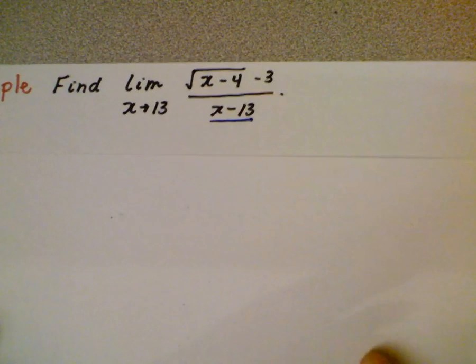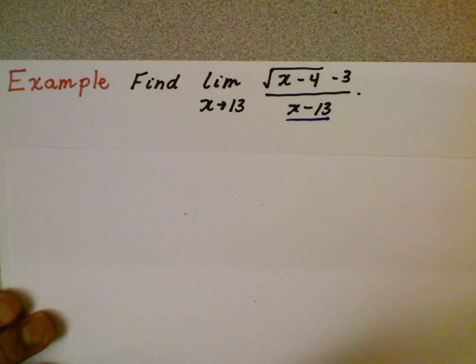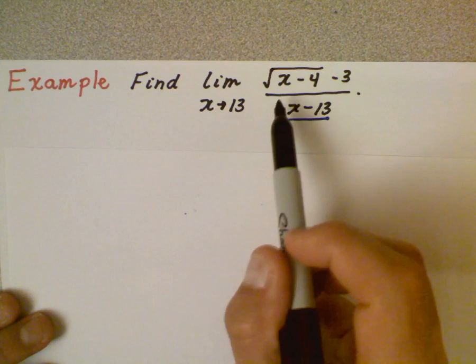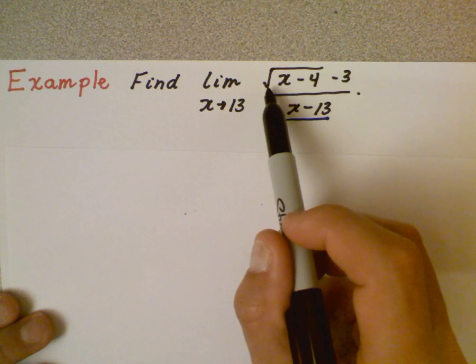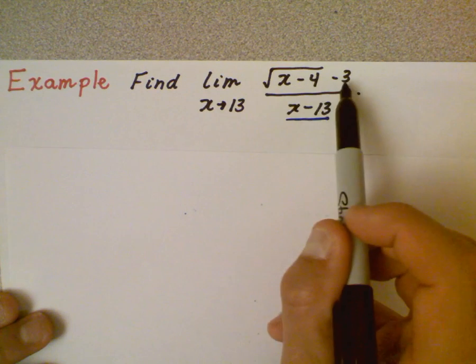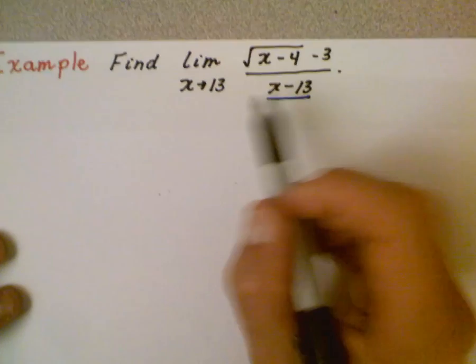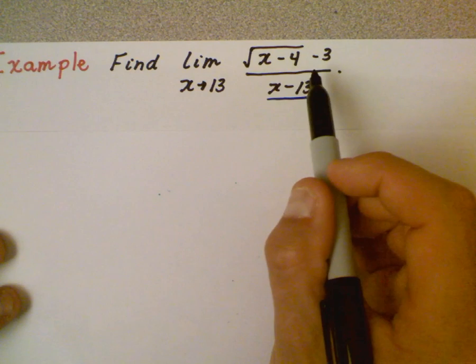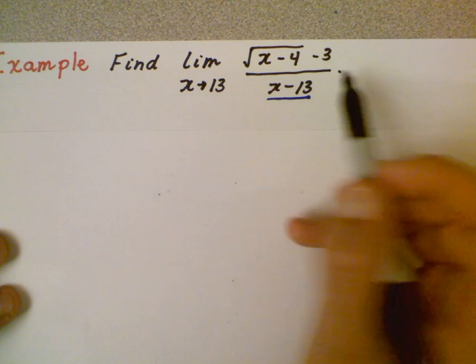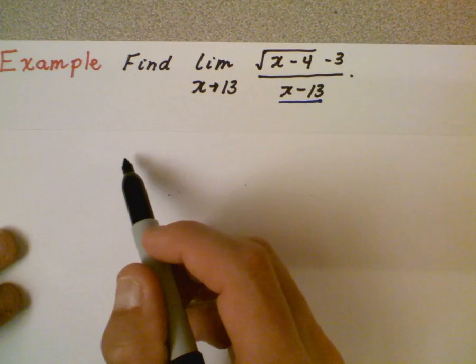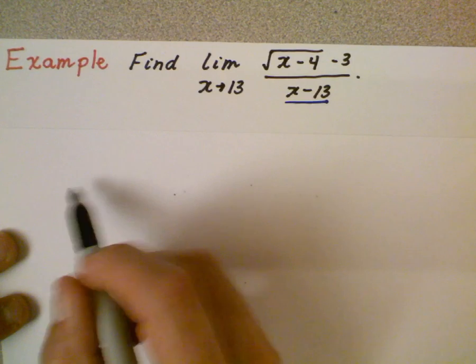And the example is going to be find the limit as x approaches 13 of the square root of x minus 4 minus 3 all divided by x minus 13. So if I plug in 13 I'm actually going to get 0 over 0 which is indeterminate. You could use L'Hopital's rule but again, we're just starting out so we're not going to do that.